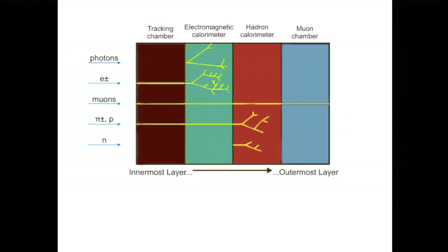Pions and protons — charged ones show up in the tracker — deposit their energy in the hadronic calorimeter. A neutron is neutral but hadronic, so it goes through the tracker and e-cal and deposits all its energy in the h-cal. Because these particles behave differently in different detector layers, you can in principle distinguish these classes of particles, which is useful for particle identification. Taus are complicated because they have a short lifetime and decay into other things before reaching the detector.